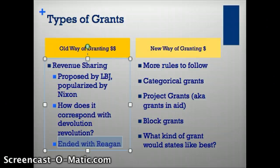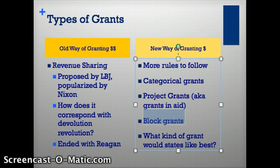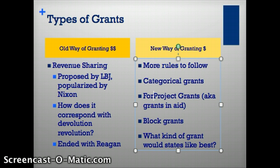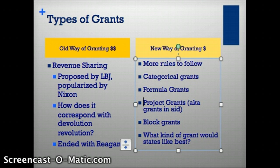Now we really have a system of federal grants, and federal grants come with a couple more rules to follow. There are two types of grants: categorical grants and block grants. I'm going to add formula grants to this — that's not in your notes, so you need to add that.